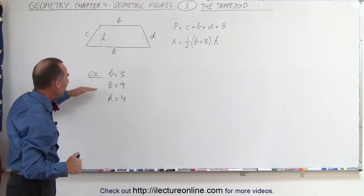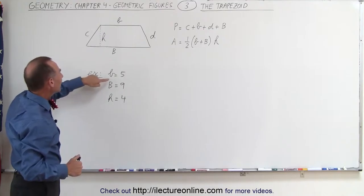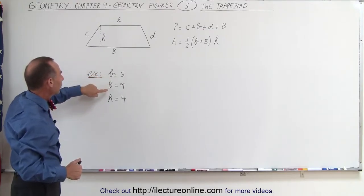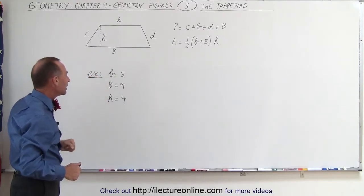Let's do an example. Here we have a trapezoid that has a small b equal to 5, big B equal to 9, and height equal to 4.